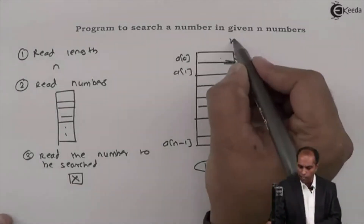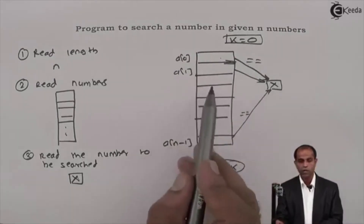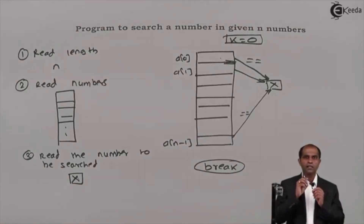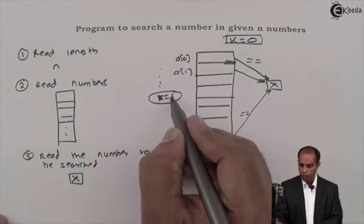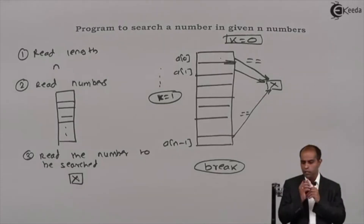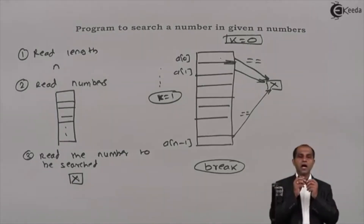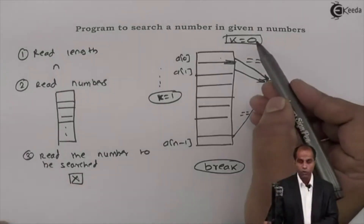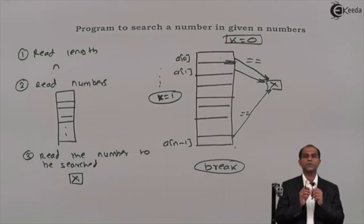To quit in the middle, I'll use a `break` instruction. At the end, to know whether the number was found, I'll use a flag variable — let's call it k, set to 0 initially. Whenever a[i] matches x, I'll change k to 1 and break. Outside the loop, if k equals 0, the number was not found. If k is 1, the number was found.